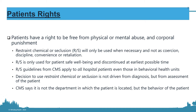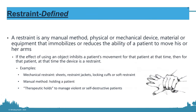Any manual method of immobilizing or reducing the ability of a patient to move is a restraint. Chemical restraints are also a type of restraint. So if you're holding a patient, tying them in a sheet, putting cuffs on them, or using soft restraints — these are all types of restraints. This includes therapeutic holds used in de-escalation practices.